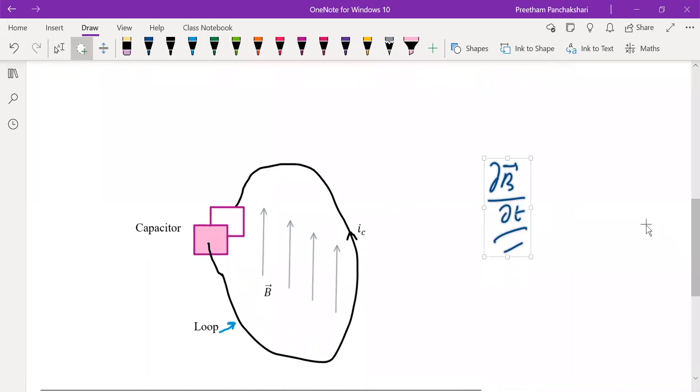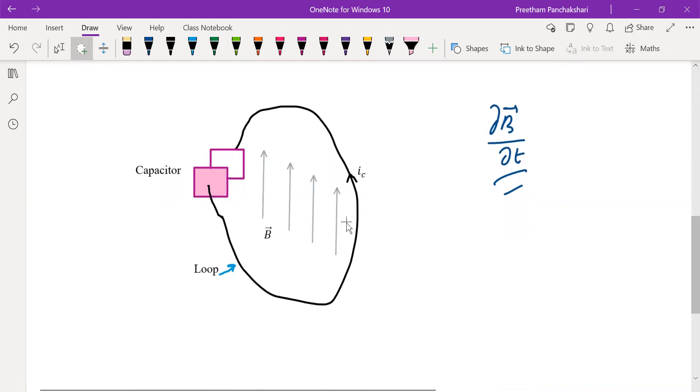Let us consider this particular closed path containing the parallel plate capacitor placed in a time-varying magnetic field B, Tesla. So the magnetic field is varying with respect to time.